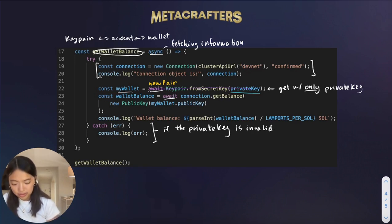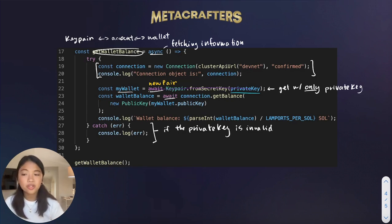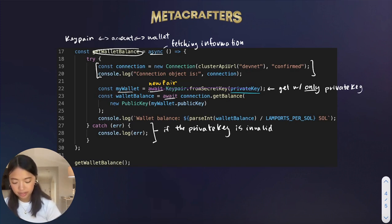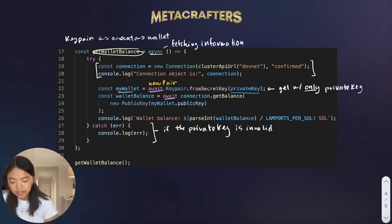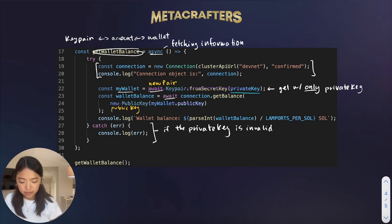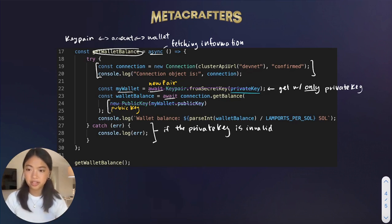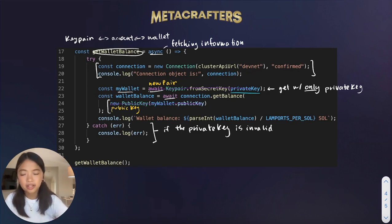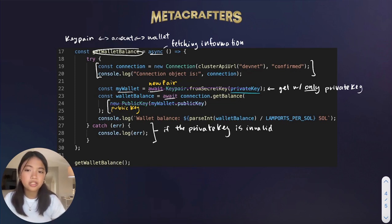Moving on to getting the wallet balance: we can get the wallet balance using connection.getBalance(), passing in the parameter of a public key. You might notice we could replace this with the public key variable we made before, but this is just to show that we can get the public key from the key pair made with the private key. Also notice that to get this information, we have to fetch it through the connection — it's not already available in the wallet, because it requires a network request.